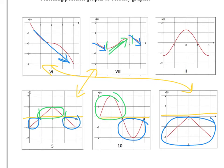That last velocity graph goes with the first position graph. Now let's go from velocity to position for the remaining match. The middle velocity graph is positive — above the x-axis from zero to two — which means the position graph should be increasing from zero to two. Looking at the last position graph, it is generally increasing from zero to two, with positive slopes all the way, and then from two to four it goes down, indicating negative velocity.